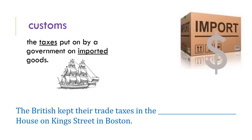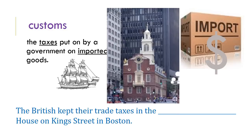Your next word is customs. Customs means the taxes put on by a government on imported goods. Think of a ship with cargo coming into port — the import coming into the country is taxed, and the word for that special tax is customs. There was a customs house in Boston, still there today, where the British kept their trade taxes on King Street. Inside, officers and tax collectors did the transactions to collect money from each import that came into the harbor.